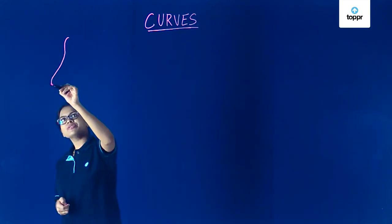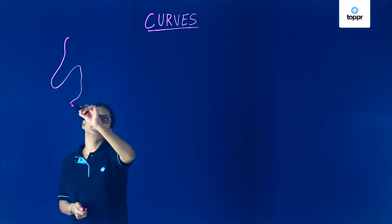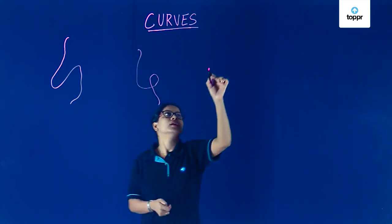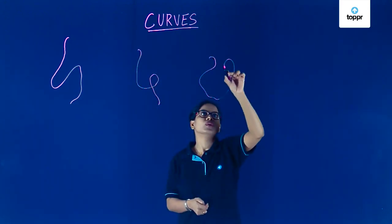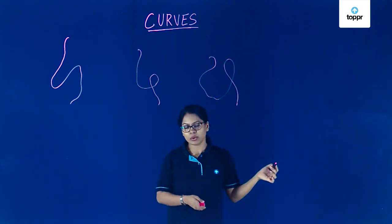What happens if I just draw aimlessly like this? What will I get? What are these? What a silly question, right?